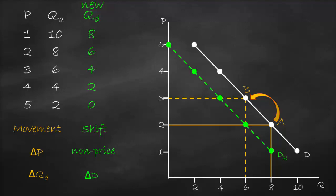To summarize: a movement means we move from one point to another on the same demand curve, and this happens only when we change the price — resulting in a change in quantity demanded. A shift means we have a new demand curve, caused by any factor other than the price of this product, which we call non-price factors. This results in a new demand curve and is called a change in demand.